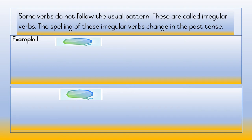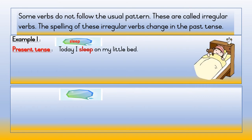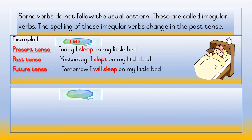Some verbs do not follow the usual pattern. These are called irregular verbs. The spelling of these irregular verbs changes in the past tense. Example one — the word is 'sleep.' Present tense: Today I sleep on my little bed. Past tense: Yesterday I slept on my little bed. Future tense: Tomorrow I will sleep on my little bed.